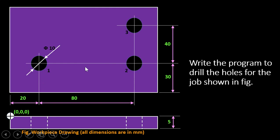The second hole is at 20 plus 80, that is 100 mm in the X direction and 30 mm in the Y direction. The third hole is at 100 mm in the X direction and 30 plus 40, that is 70 mm in the Y direction. So we need to write a program to drill these holes as shown in the figure.